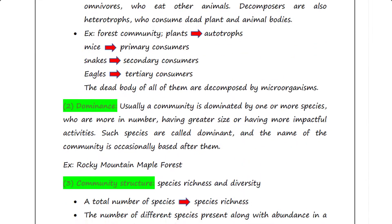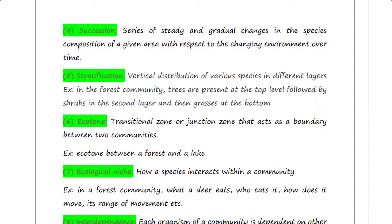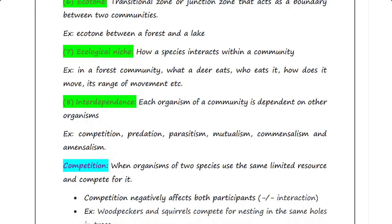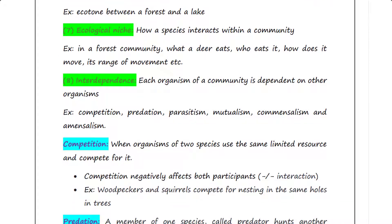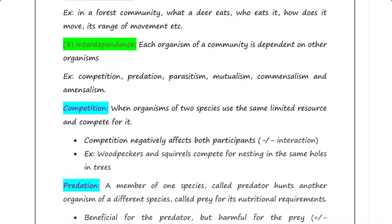Today we will talk about the interdependence — that each organism of a community is dependent on other organisms. Interdependence can be of different types: competition, predation, parasitism, mutualism, commensalism, and amensalism.